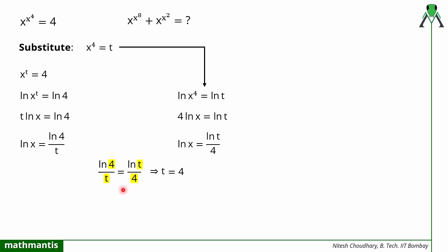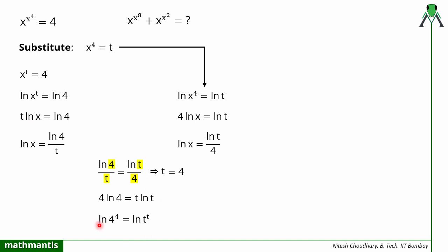However, in mathematics you cannot just compare directly like that without justification. To justify this properly, we cross-multiply: 4 ln 4 equals t ln t. Using the power rule of logarithm, this can be written as ln of 4 raised to power 4 equals ln of t raised to power t. Since ln a equals ln b implies a equals b, we get t raised to power t equals 4 raised to power 4, which confirms t equals 4.